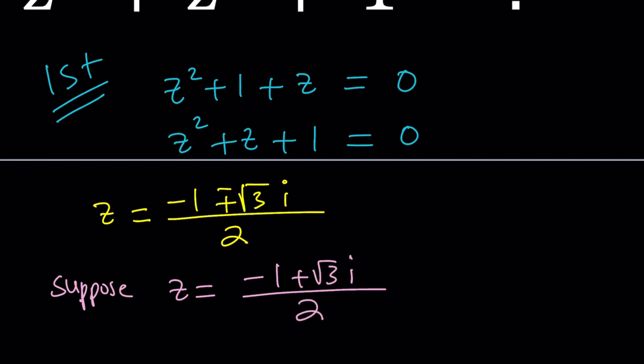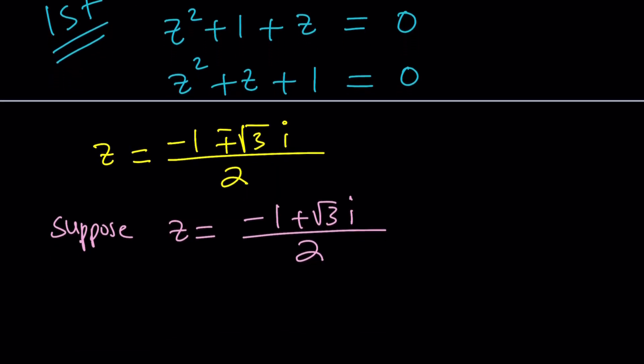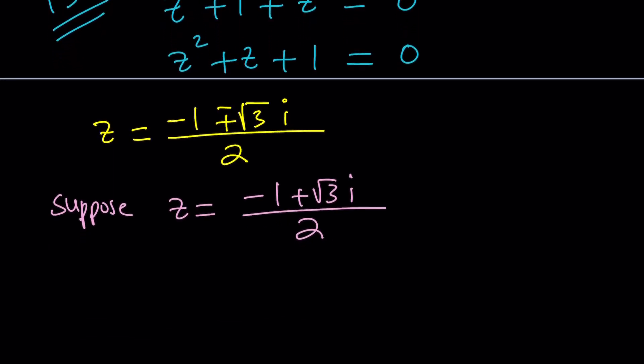Equivalently, you could assume the other solution because it's not going to matter. Now, suppose z is the value given here. Let's go ahead and write this in polar form. How do we do that? We can go ahead and consider the complex plane. This is the real axis and this is the imaginary axis and our number is going to be negative 1 half plus root 3 over 2i.